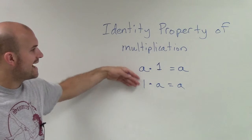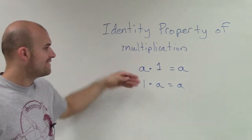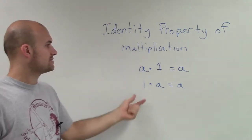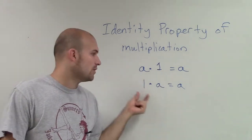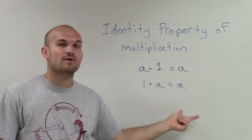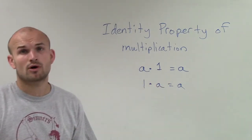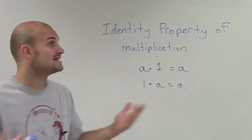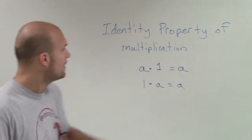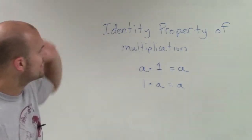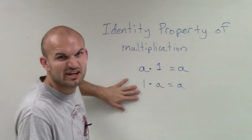Because now, whenever we have something multiplied by 1, we can just write it by itself, which is extremely important when we're going to try to isolate the variable for solving the equation. Just for identity property of multiplication, there it is.